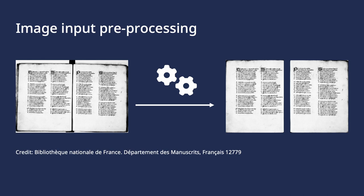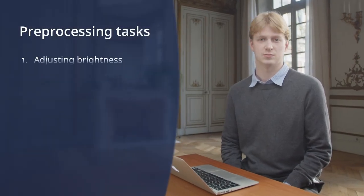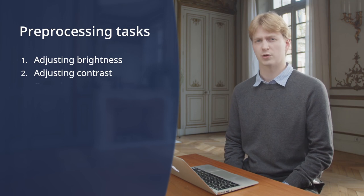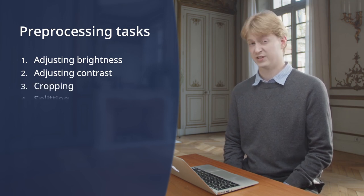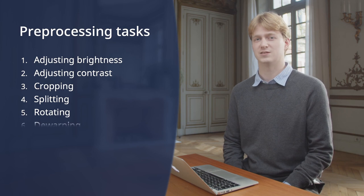If you're lucky, you can do ATR right away. This is usually the case if you received your images from a cultural heritage institution. However, if you're confronted with double-sided pages or poorly cropped images, then you will have to go through what is called pre-processing. This can include adjusting brightness and contrast, cropping, splitting, rotating, and dewarping.